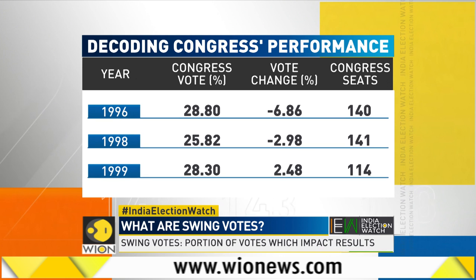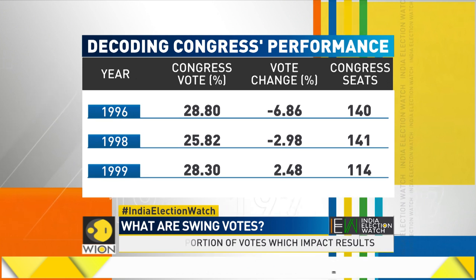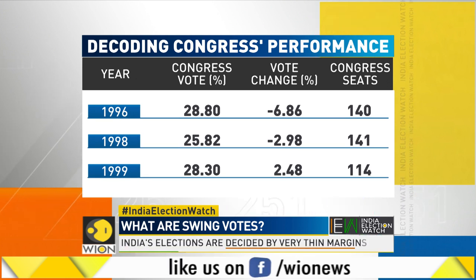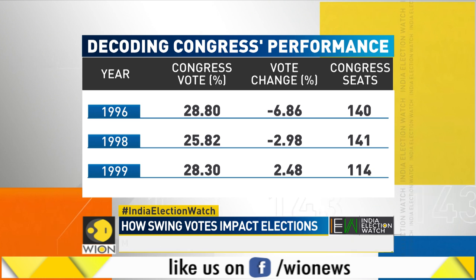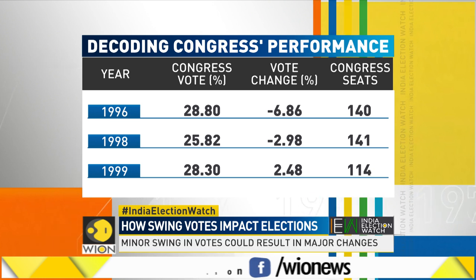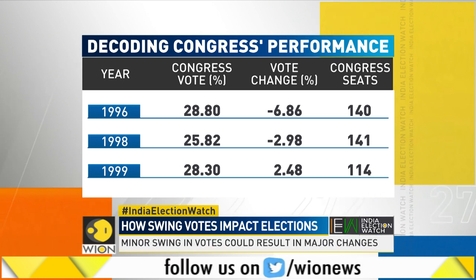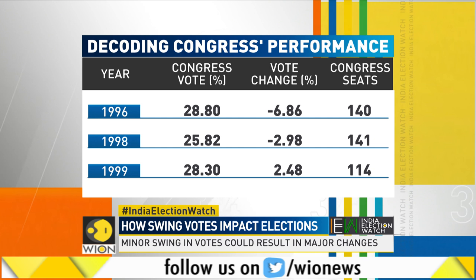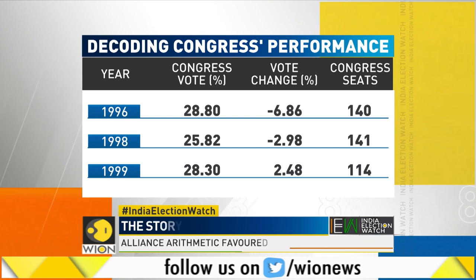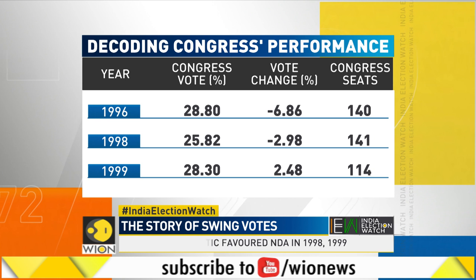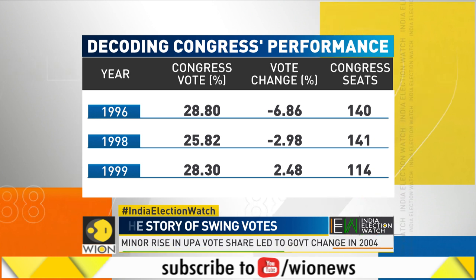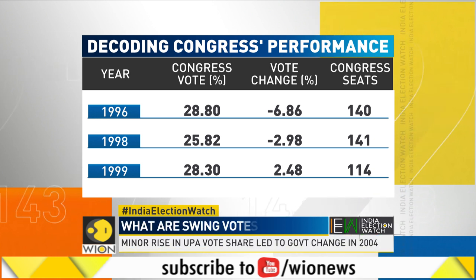Let's compare how the Congress Party did in these three elections, to see if we can interpret results statistically. Congress secured 28.8% of the votes in 1996, much above the BJP. But its seat tally fell to just 140, and it could not form the government.